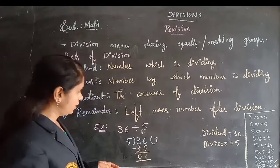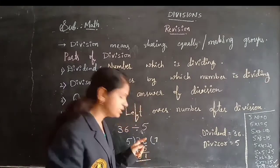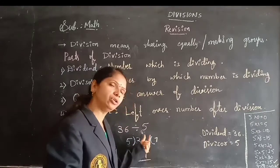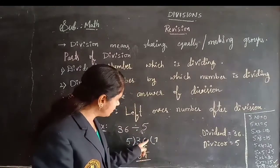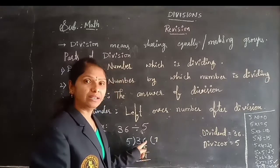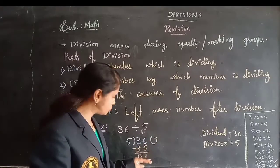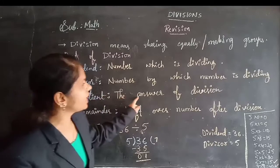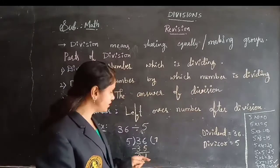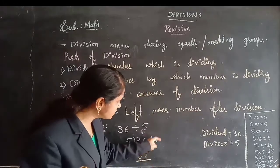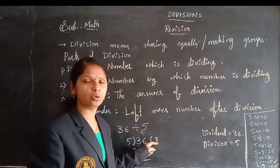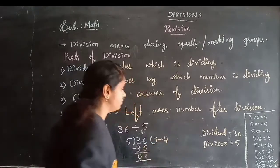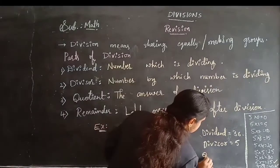After this, we don't have more digits to bring down in the dividend. If you have more digits, you should continue the division. But here we have completed the digits of the dividend number, so we stop. What is the quotient? The answer of the division — this will be the quotient. Quotient is 7.